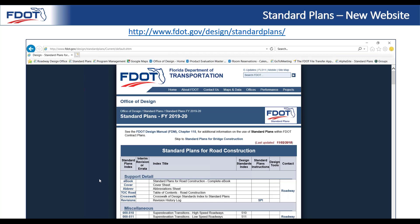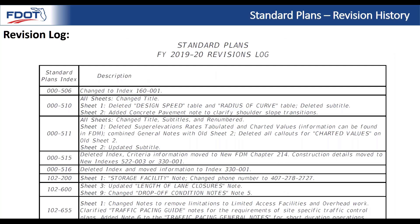The revision log is another topic I always like to bring up, because the vast majority of changes that occur from one cycle to the next are documented there. If you have questions about where something went or what type of change occurred within a certain index, the revision log is always the best place to start. It's also the best place to start if you're doing a plans update for a project, going from one version of the standards to the next, so you know what items within the index have changed.